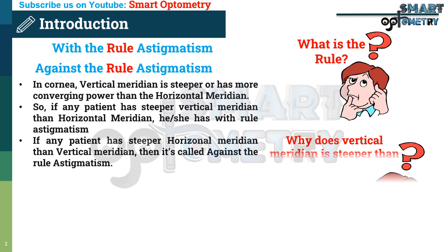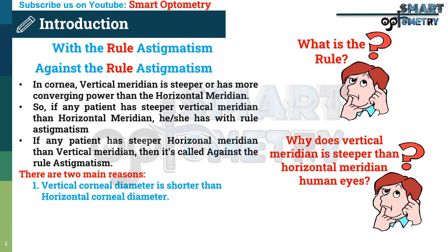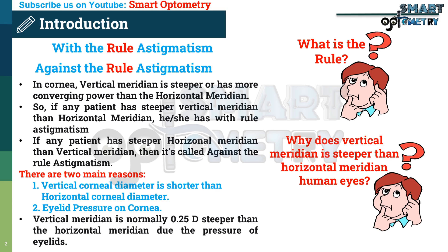You might be thinking: why is the vertical meridian steeper than the horizontal meridian in human eyes? There are two main reasons. First, the vertical corneal diameter is shorter than the horizontal corneal diameter. Second, eyelid pressure on the cornea. The vertical meridian is normally 0.25 diopters steeper than the horizontal meridian due to the pressure of eyelids.